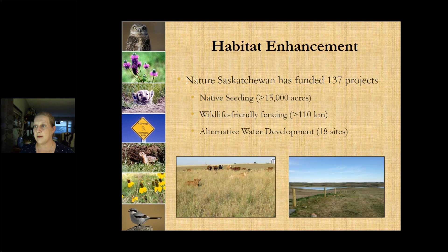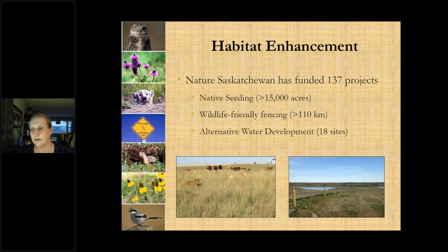We offer funding to increase and improve habitat for wildlife, with focal species being burrowing owls, shrikes, Sprague's pipits, ferruginous hawks, and piping plovers. To date we've funded 137 projects. Habitat enhancement projects include native seeding to convert cropland to large pastures and reduce fragmentation; wildlife-friendly fencing to preserve newly seeded areas and improve pasture health; projects to protect ferruginous hawk nesting sites; and alternative water development such as solar pumps to improve pasture health and protect shoreline. Projects are funded on either a 50 percent or 100 percent cost-share basis, and participants sign a 12-year contract to ensure long-term benefits.